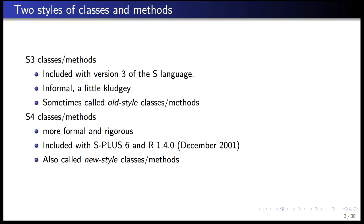In version 4 of the S language, the S4 classes and methods system was introduced. This is a much more formal and rigorous system, less prone to unexpected problems. It was included in S-Plus version 6 and in R version 1.4.0, around December 2001. These are sometimes referred to as new-style classes and methods or just S4 classes and methods.